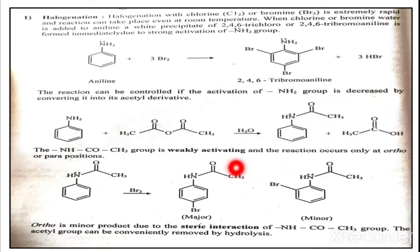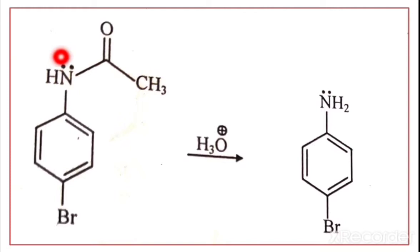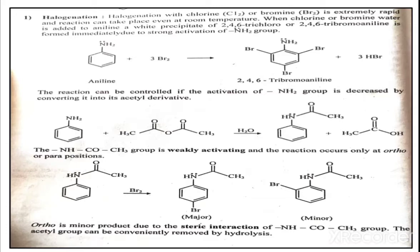The reaction takes place at the ortho and para positions. The acetyl derivative undergoes treatment with Br2, giving the para product as the major product and ortho as the minor product, due to steric interaction of the NHCOCH3 group. The acetyl group can be conveniently removed by hydrolysis — the OH minus attacks the carbonyl carbon, the bond cleaves, and we get back the NH2 group.